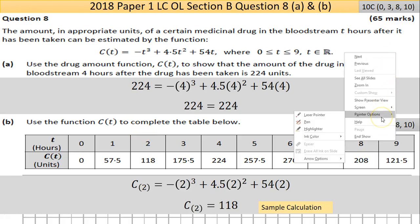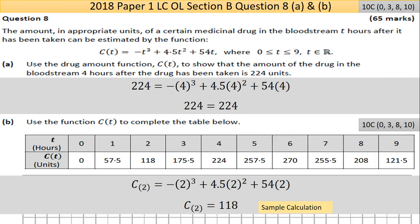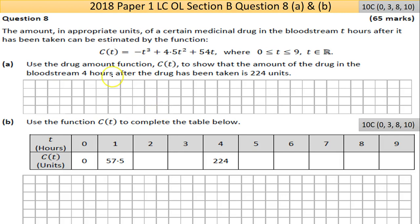Hi and welcome to 2018 Paper 1, Leaving Certificate Ordinary Level. We're working here on Question 8. As usual I would suggest you pause the video and just have a go at the question, then if you can't get it just look at the answer on the next page as the video progresses. If you want the notes I'm working off, send me an email at shanetroy@gmail.com — that address will be in the description below. So Question 8 — there are two parts, A and B, on this page.